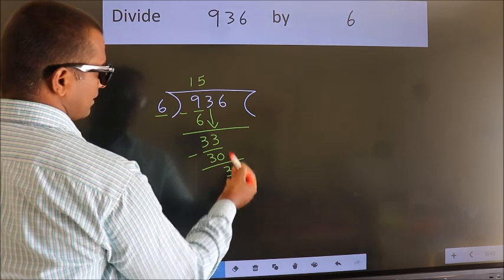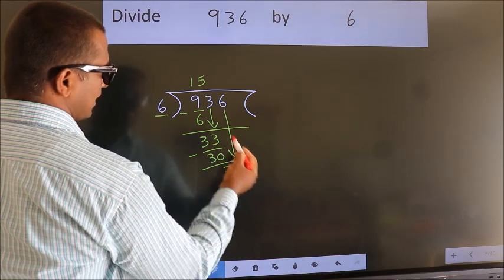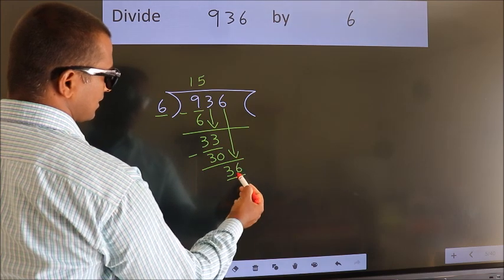After this, bring down the beside number. So, 6 down. So, 36.